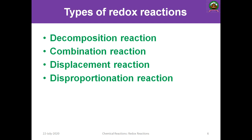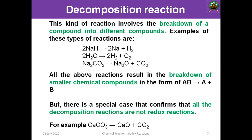What are the main types of redox reactions? There are four important types: decomposition reaction, combination reaction, displacement reaction, and disproportionation reaction. We will discuss each one. First, the decomposition reaction — as the name indicates, decomposition means breakdown. It is the breakdown of a compound into different compounds.